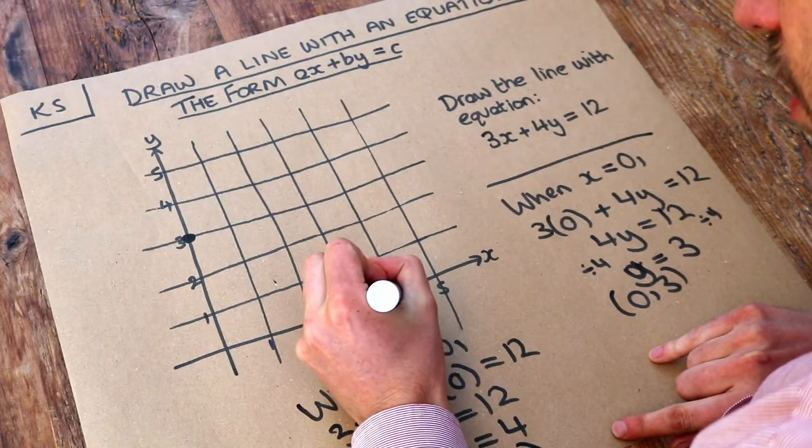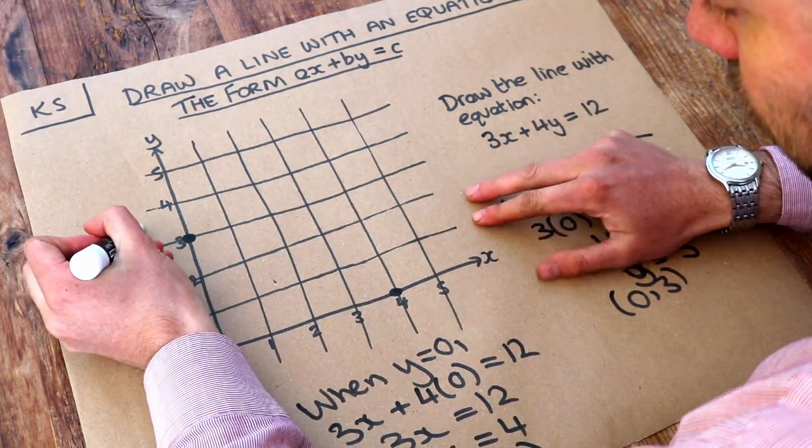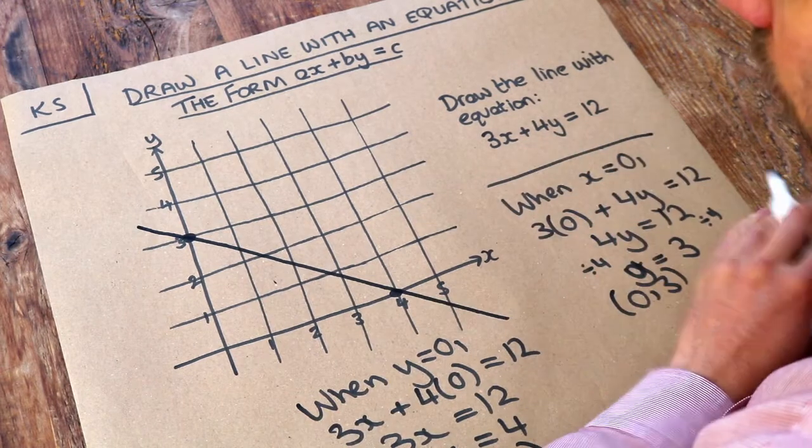Let's plot four zero, and that's all we need to draw a straight line. We now just need to draw a straight line that goes between those two points and we are done.